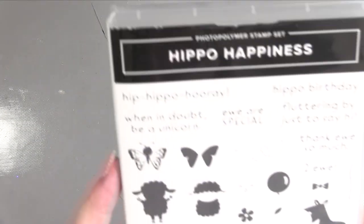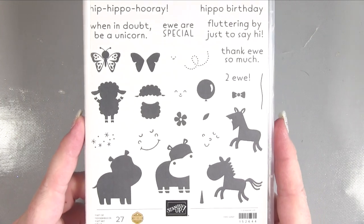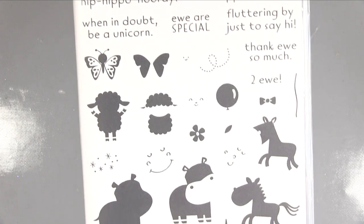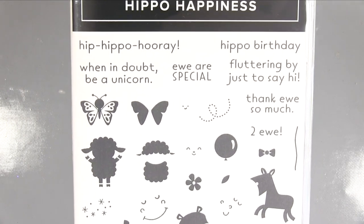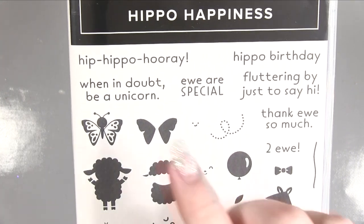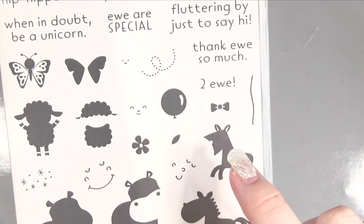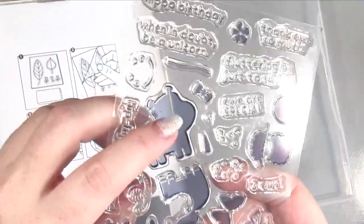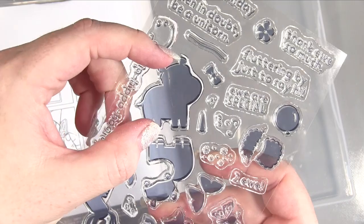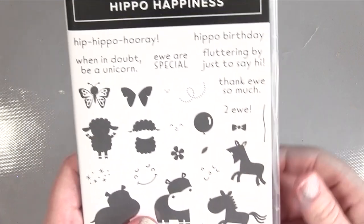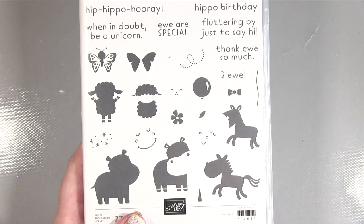And then I got this one called Hippo Happiness. Now this is one of those where you can just layer these up to make your little animals and then you've got some cute little sentiments here like hip hippo array and when in doubt be a unicorn. And this particular one is actually photopolymer and as you can see they're not massive little images. I think they did come with dies so you could die cut around them.